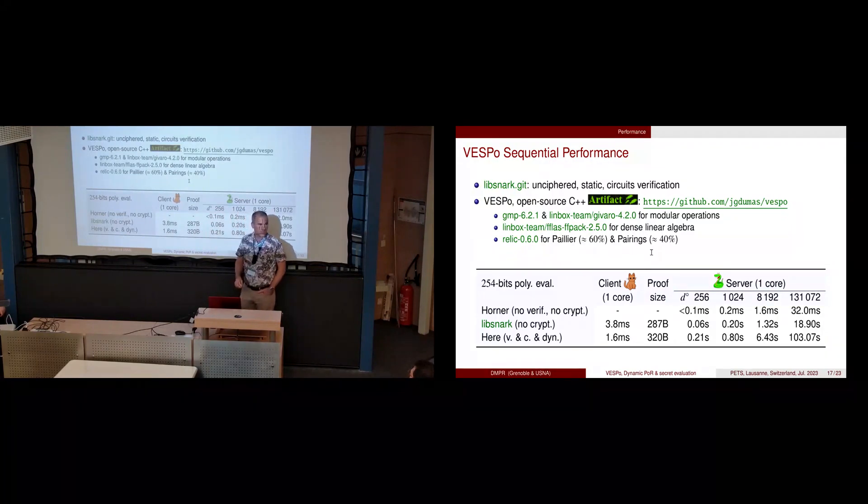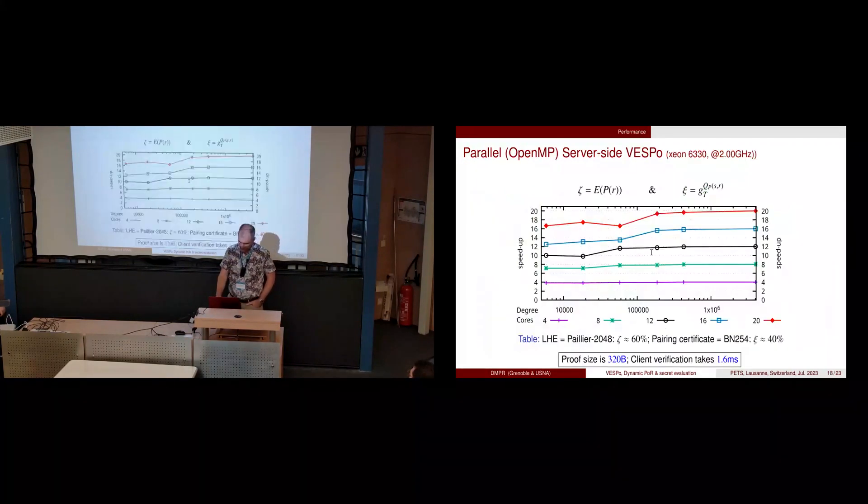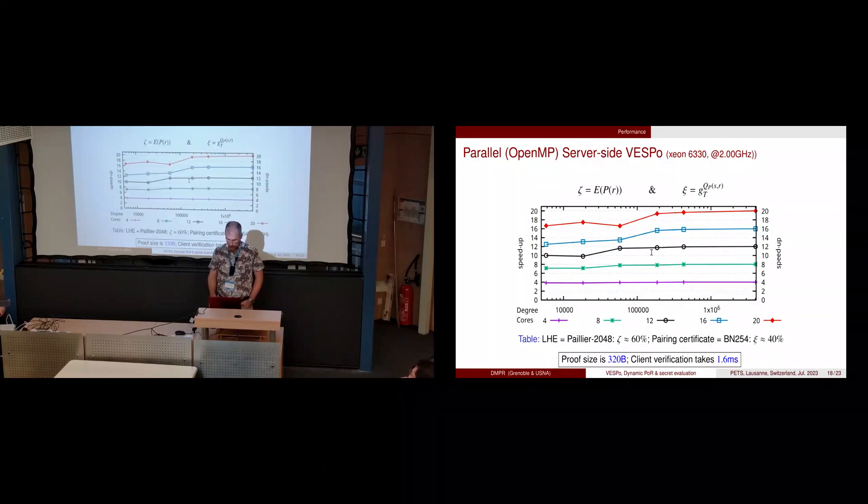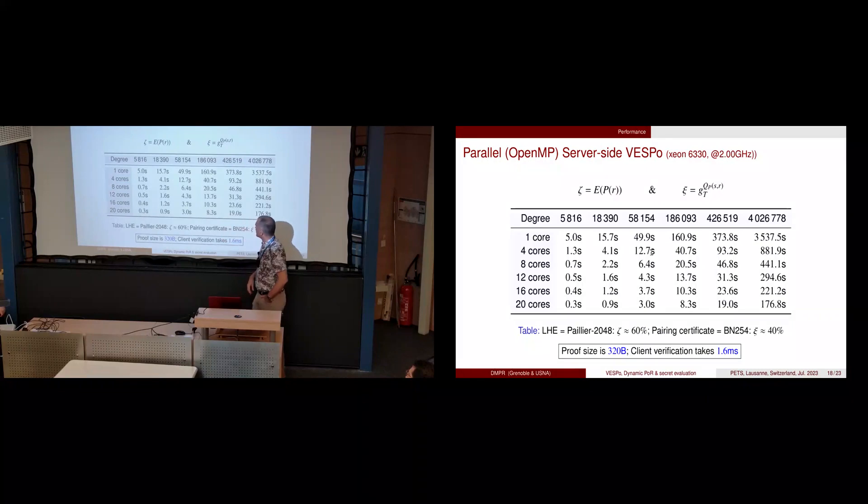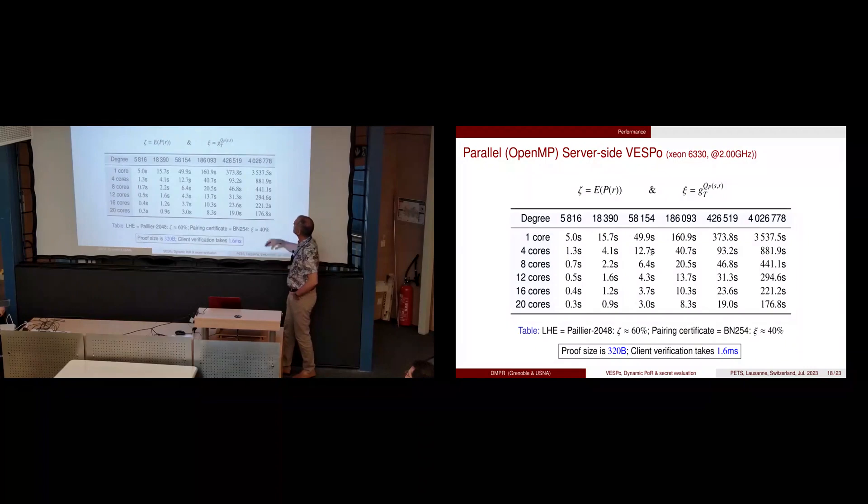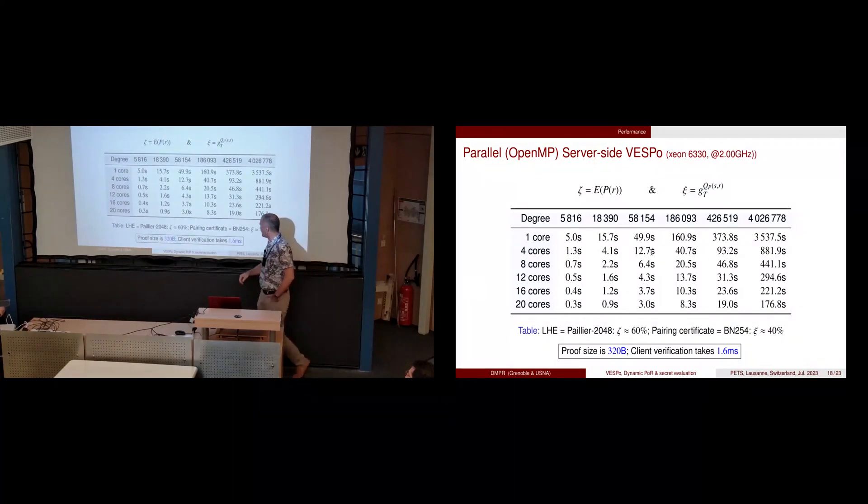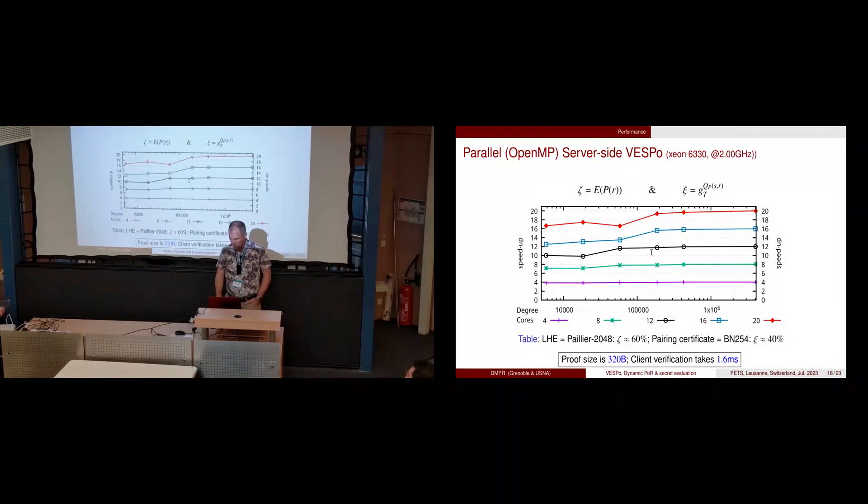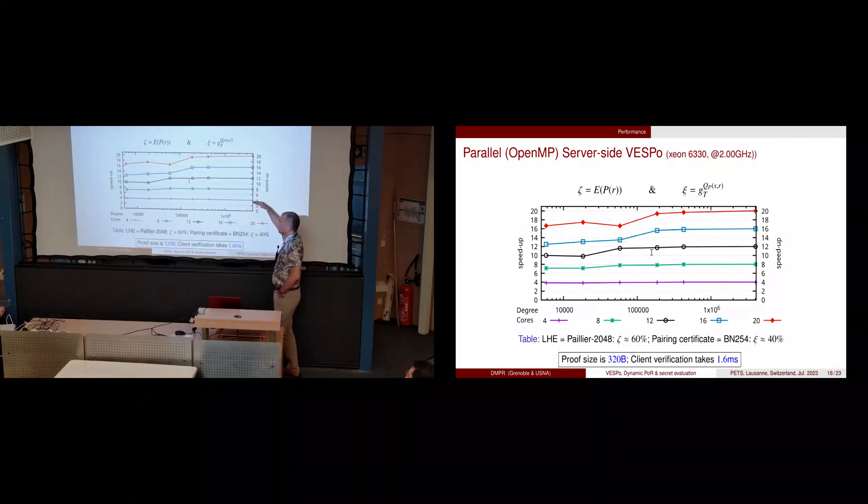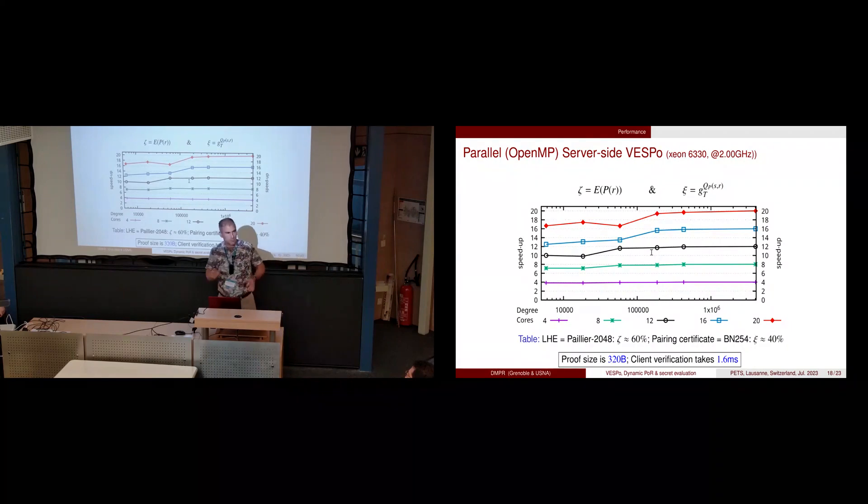This is scalable because if you have more CPUs on the server side, you can have pretty nice speedups. For instance, here for a degree four million, the speedup is almost linear: if you have four processors it's four times faster, eight times faster, twelve times, sixteen times, twenty times faster. We can pretty much use a server with a lot of resources and a small client, and this works nicely.